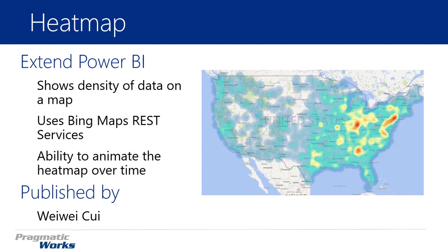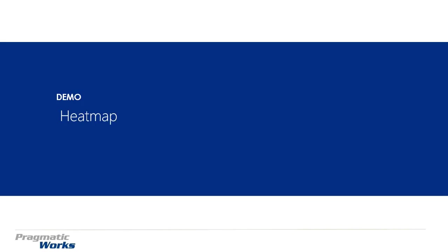Keep in mind that just because you're animating it does not mean it has to be over time. You could put in categorical data and it would animate through the alphabet, or through numeric data — 1 through 3 or 1 through 10, whatever you need. You can animate through other data types as well; it does not have to be a date-time. Let's go ahead and take a look at how we can use the heat map inside Power BI Desktop.